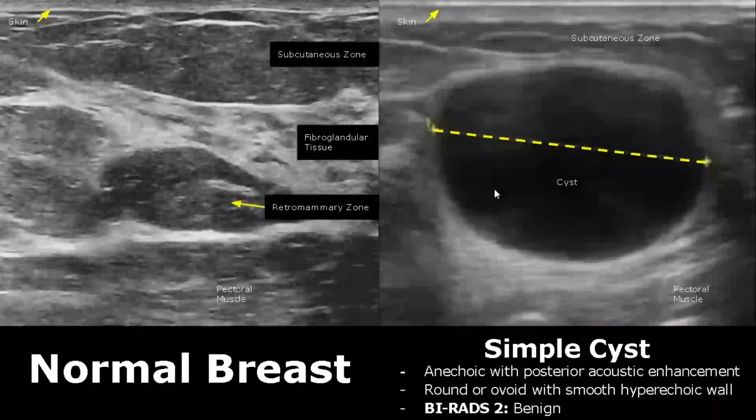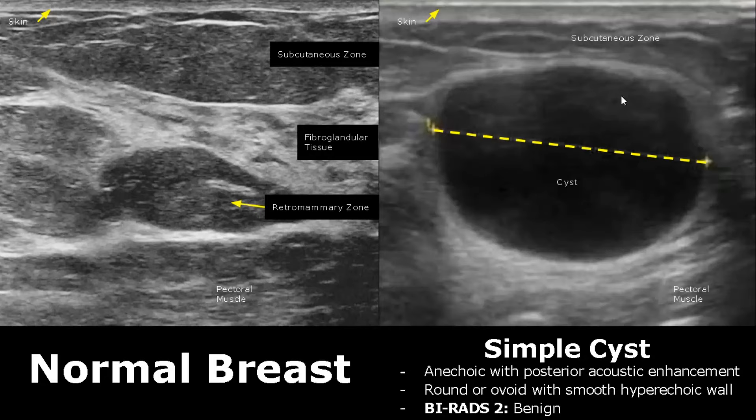A simple cyst will appear as an anechoic structure with posterior enhancement. The cyst will be round or ovoid with a smooth hyperechoic border. It is classified as BI-RADS 2, which is benign.